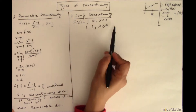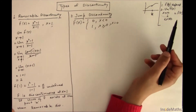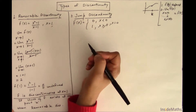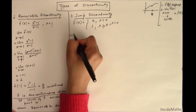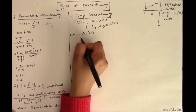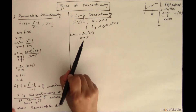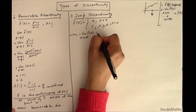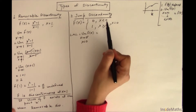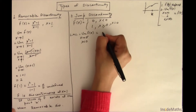We'll check the continuity of this function at x = 0. To find the limit of piecewise functions, we separately find the left-hand limit and right-hand limit. The left-hand limit is the limit of f(x) as x approaches 0 from the negative side, meaning when x < 0. When x < 0, the function equals 0, so the left-hand limit is 0.